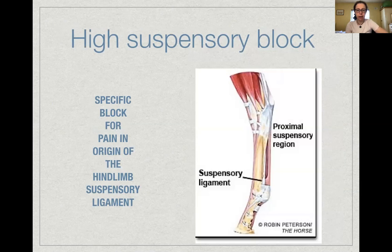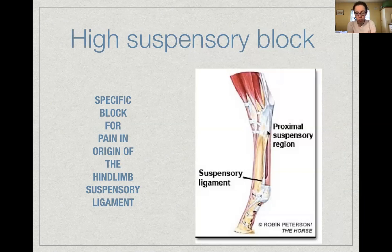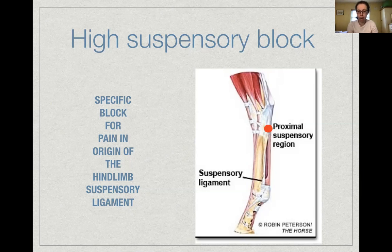A high suspensory block is used to diagnose pain at the origin of the hind limb suspensory ligament. The suspensory ligament originates just distal to the tarsus or carpus on the back of the metacarpal or metatarsal bone, runs down the back of the third metacarpal bone, divides at the proximal sesamoid bones, runs over the lateral pastern, and merges with the extensor tendon at the proximal interphalangeal joint level. If it is strained, the horse will be painful at its origin. To diagnose this, the limb is picked up to push the flexor tendons aside and local anesthetic is injected into the proximal suspensory region.